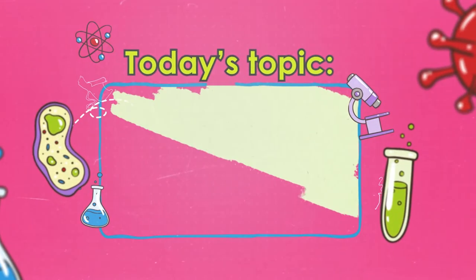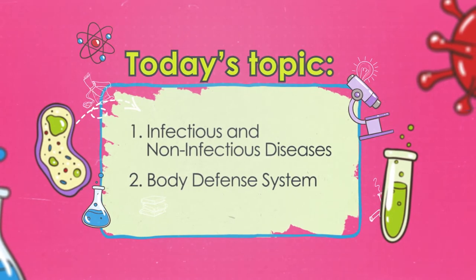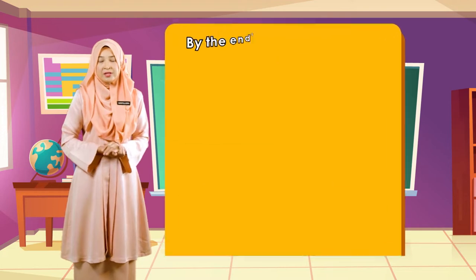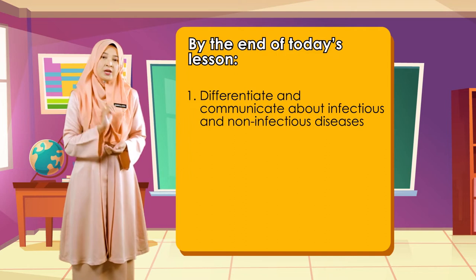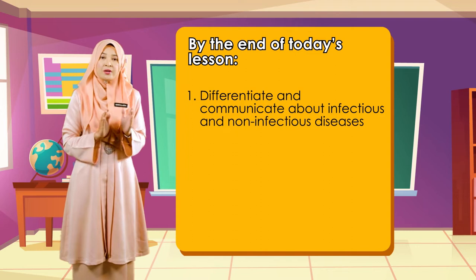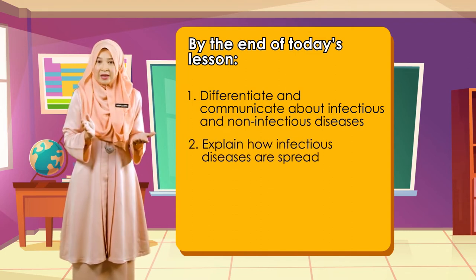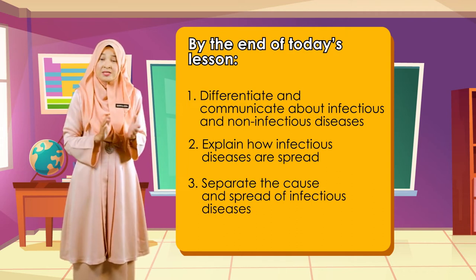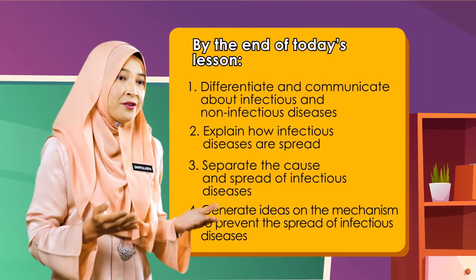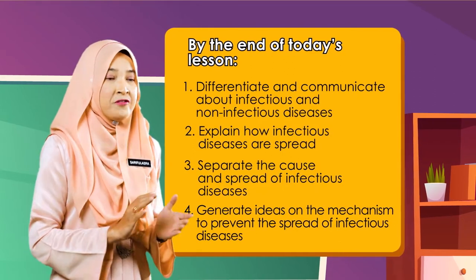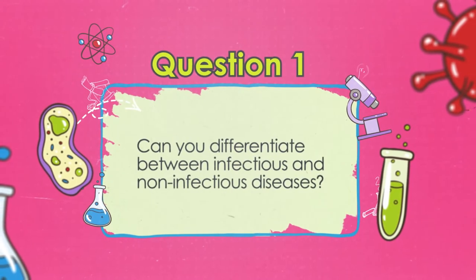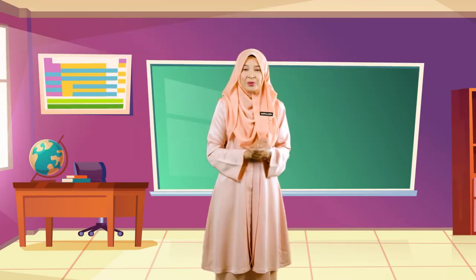We have two content standards for today's topic. Number one: infectious and non-infectious diseases. Number two: body defense system. At the end of today's lesson, you should be able to: differentiate and communicate about infectious and non-infectious diseases; explain how infectious diseases are spread; separate the cause and spread of infectious diseases; and generate ideas on the mechanism to prevent the spread of infectious diseases. Can you differentiate between infectious and non-infectious diseases? Let's do it together.